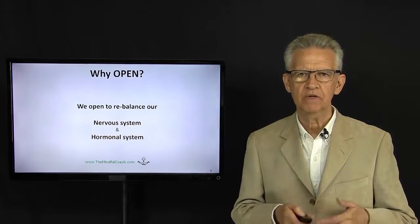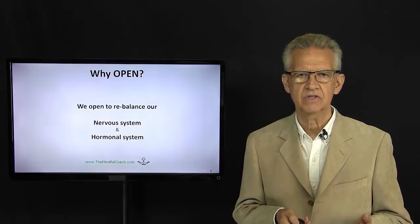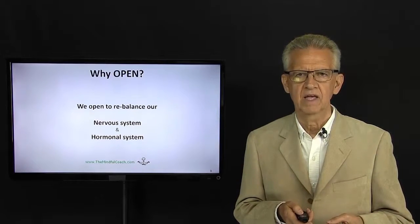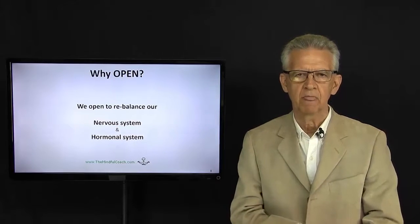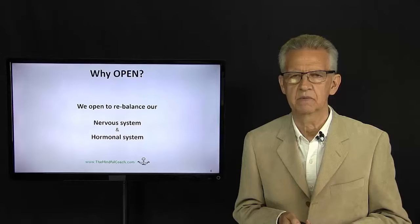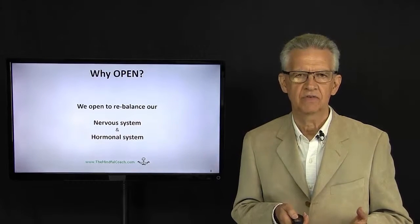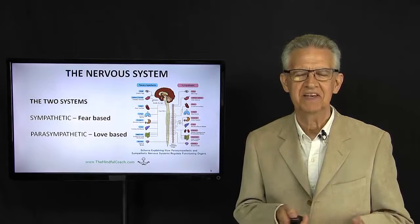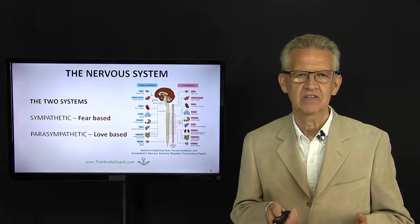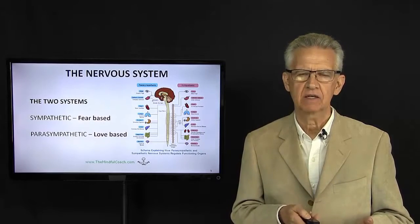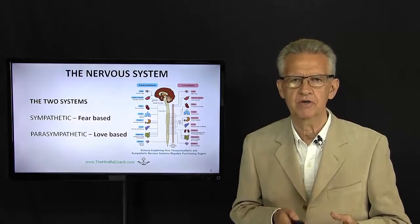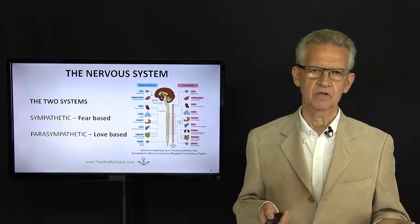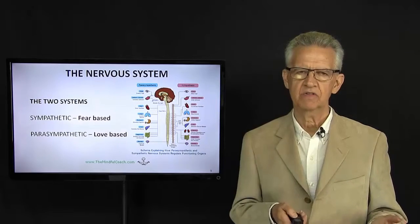Why open? We open to rebalance our nervous system. When we're anxious, our nervous system jumps into fight-and-flight mode very quickly. And also, we have our hormonal system. Our hormonal system starts to put chemicals into our blood, into our bloodstream, to prepare us for some perceived danger. So the nervous system is simply illustrated here as having two systems. One is the sympathetic, and it tends to be fear-based. So that's the one that's going to get us ready to prepare to run or to fight. The other one is the parasympathetic, and that has this love-based to it. That's like I'm feeling good about myself, I can handle this. So that's the parasympathetic nervous system.